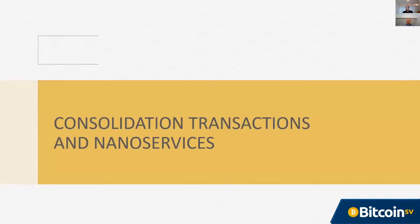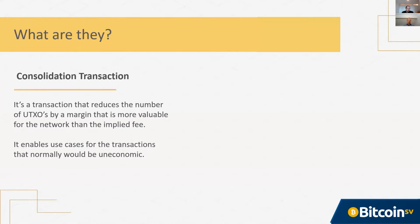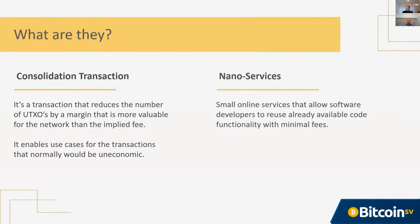Consolidation transactions have actually been around and enabled for quite a while — it was around October last year that they were first enabled — and that led to a lot of interesting conversation about the concept of nano services. There is an article on the bitcoinsv.io website that goes into more detail about consolidation transactions. So what are they? If a transaction reduces the number of UTXOs by a margin that is more valuable to the network than the implied fee, then it enables use cases for transactions that might normally be uneconomic. Aside from being a mechanism for cleaning up dust, it differs from dust return in that it does have privacy implications. It also enables what we call nano services.